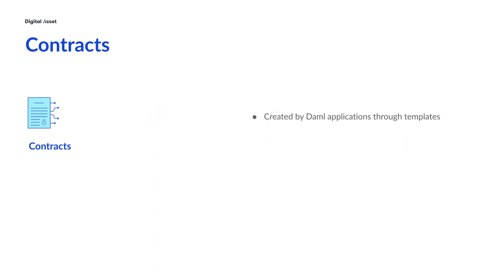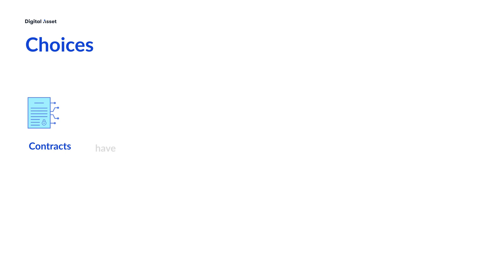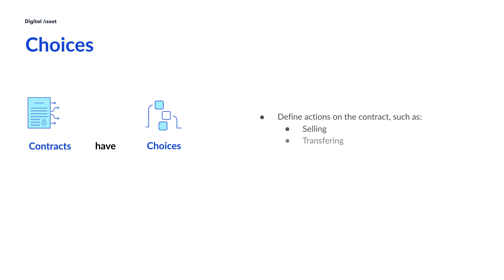Contracts are the output of a DAML application, with templates for those contracts written in the DAML language. These contracts can represent tokenized assets, records, or any number of valuable transactions. Each contract can have choices. Choices allow us to define actions on the contracts, like selling, transferring, updating, creating, and archiving contracts.